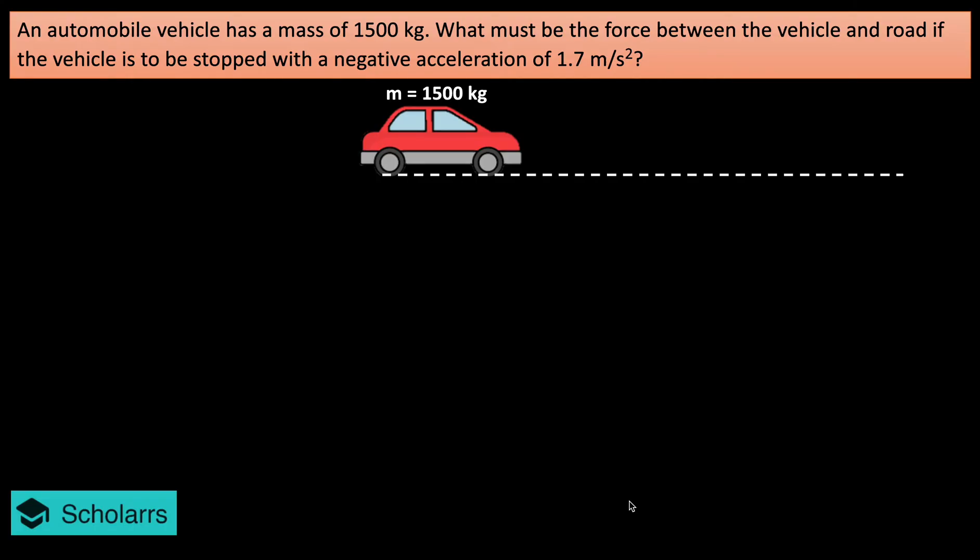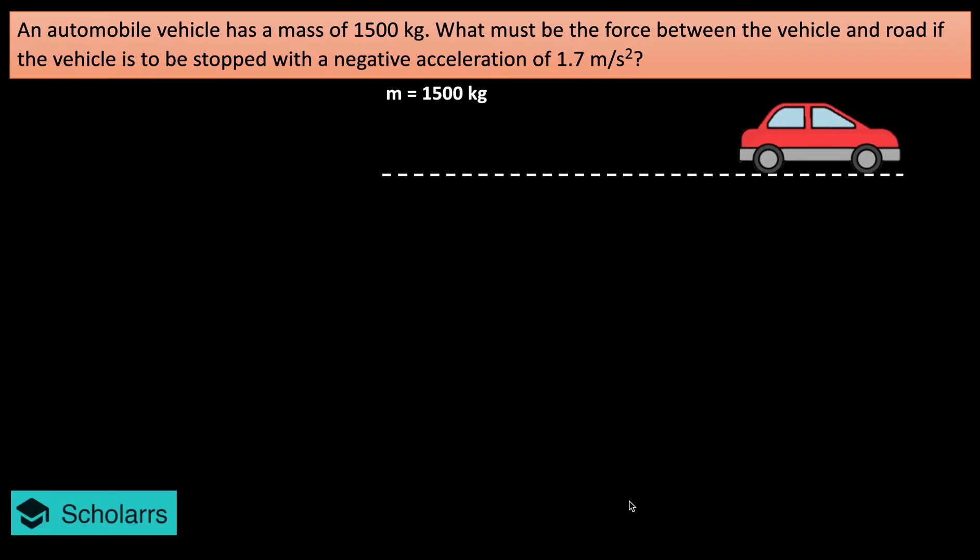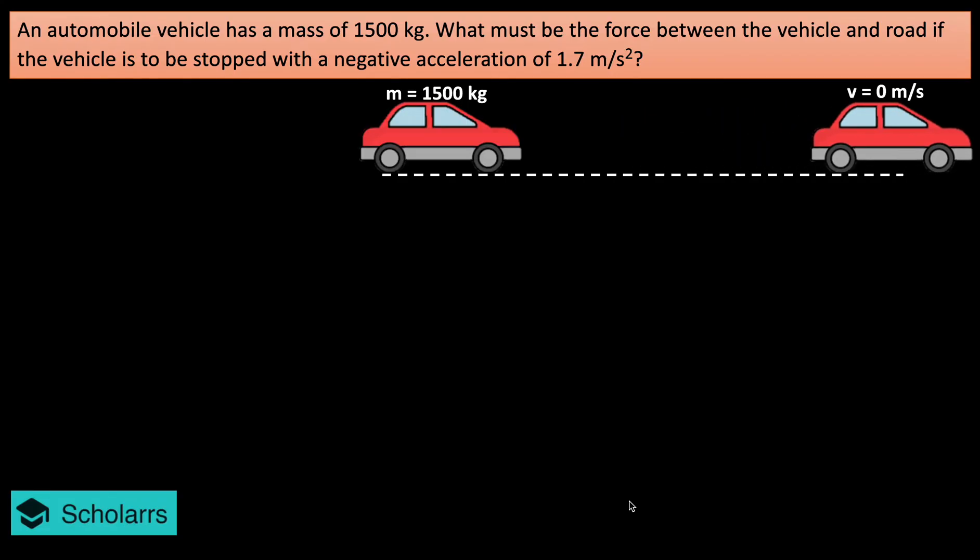If vehicle is to be stopped with negative acceleration of 1.7 meter per second square, that means this is negative acceleration applied. Final velocity is 0. So acceleration negative means the negative sign is there.